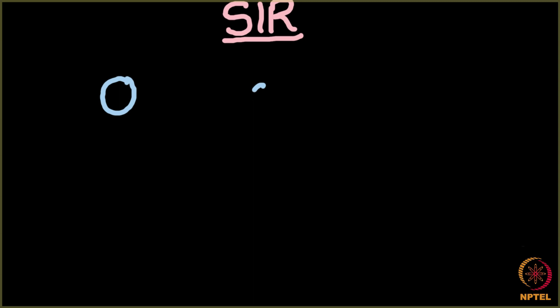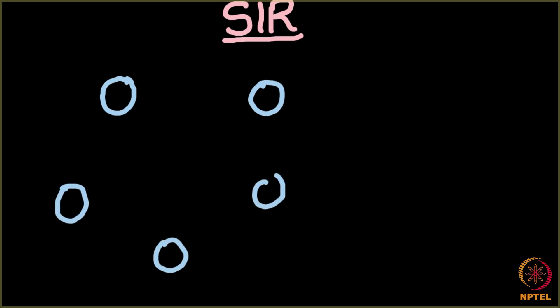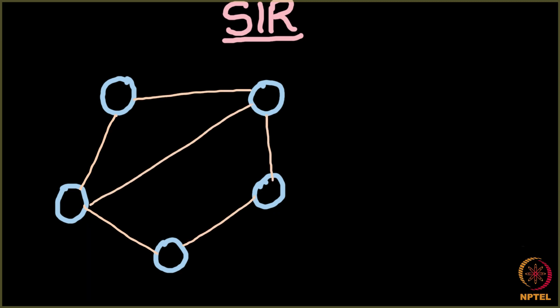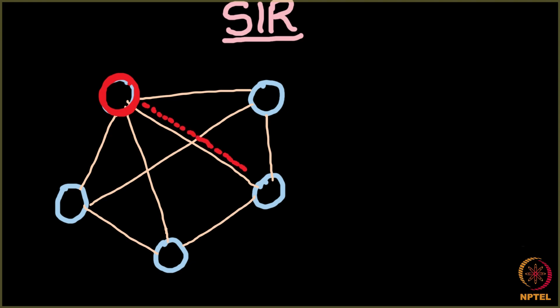Let's first talk about the SIR model. I'll take a network of five nodes where initially every node is susceptible, with some edges between them. We need at least one infected person to spread infection, so let's say this node starts the infection. This node then passes the infection to another node, and then to yet another node.